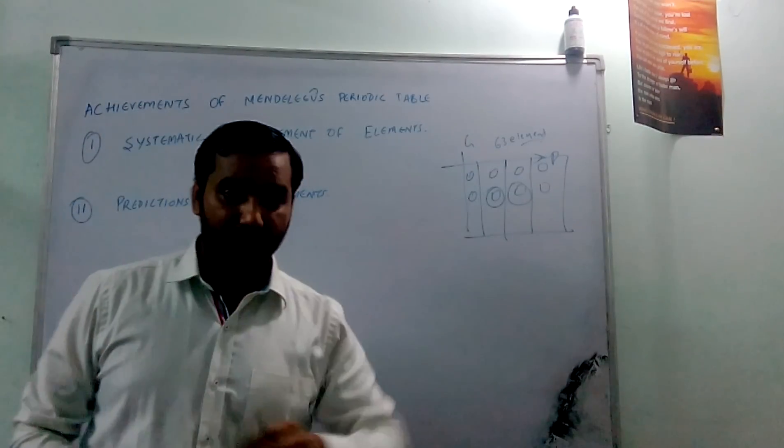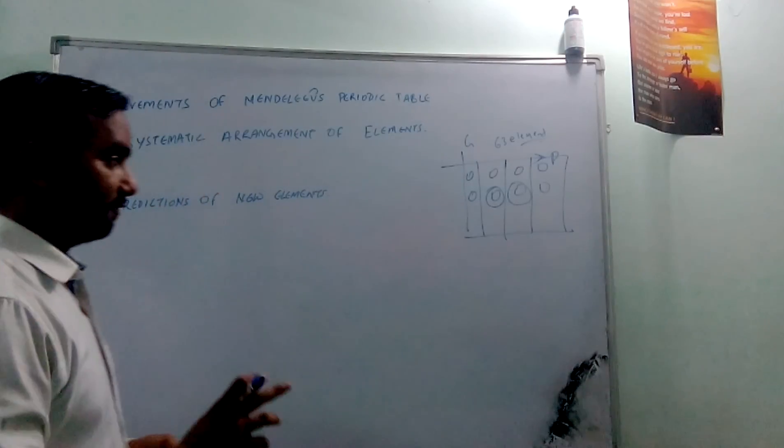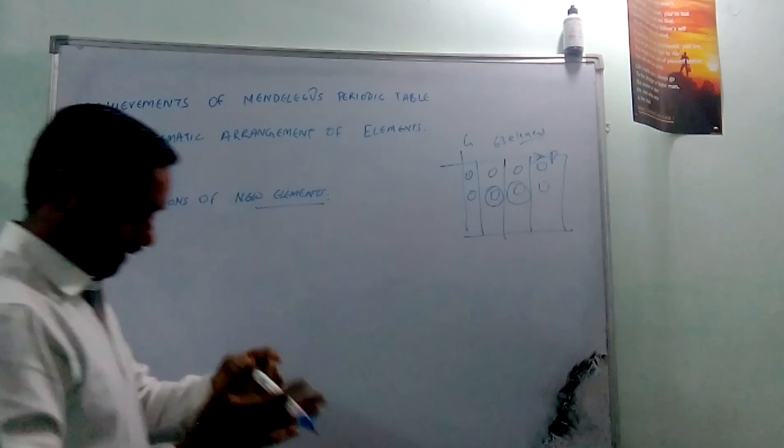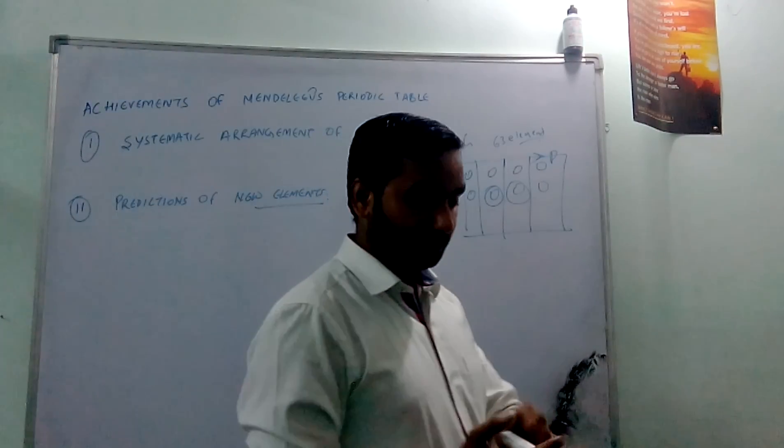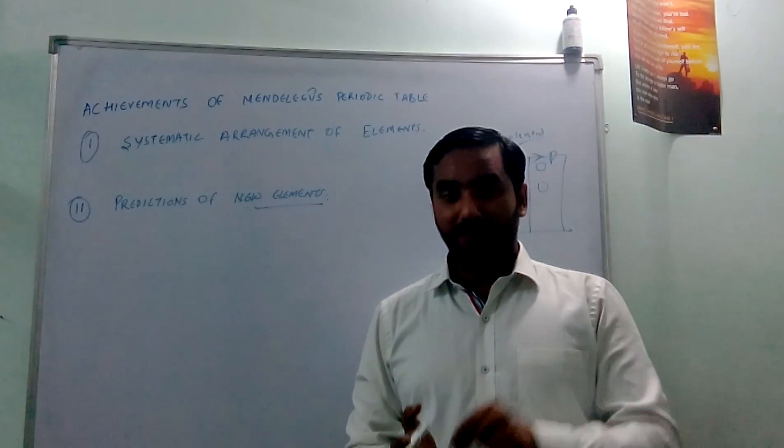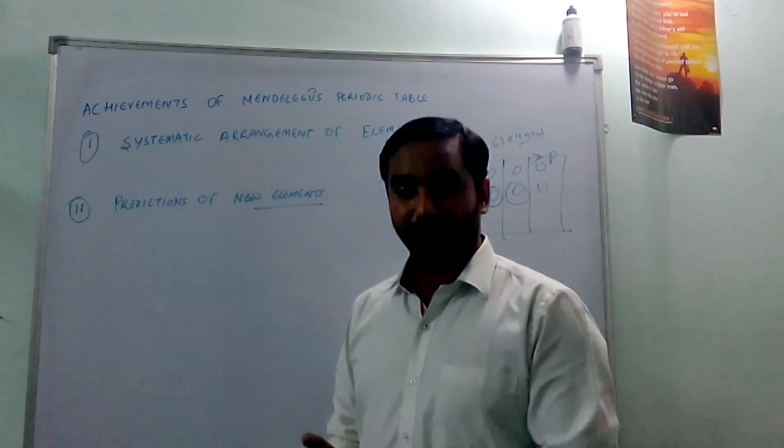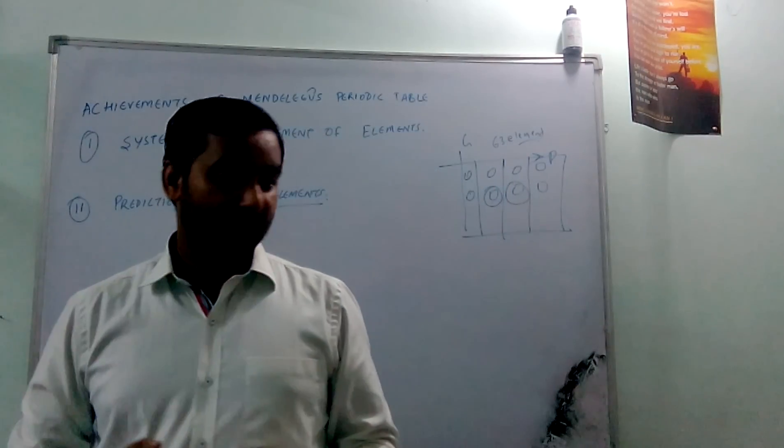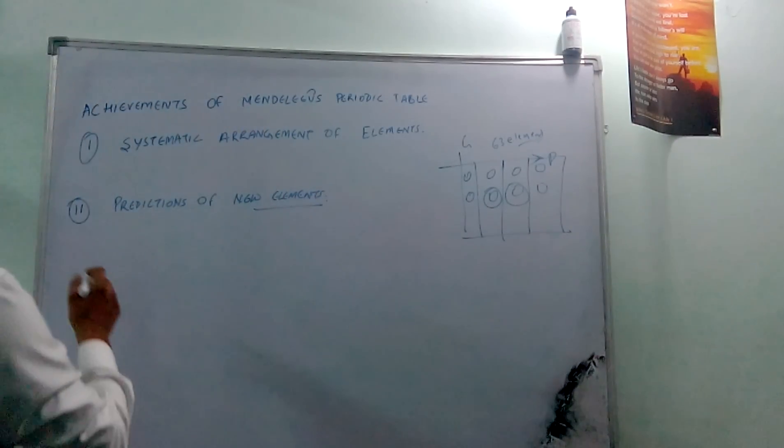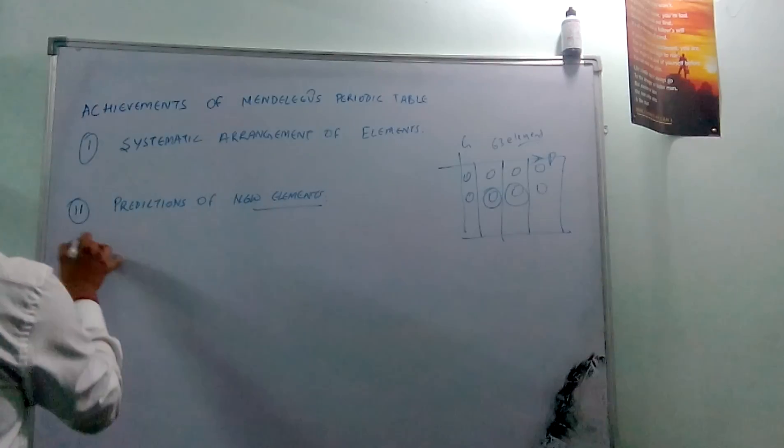This prediction is 100% accurate. When we discovered those elements, we found that the chemical and physical properties what Mendeleev stated for that element in that position is actually exactly the same as what we found. So he predicted and confirmed new element's positions.